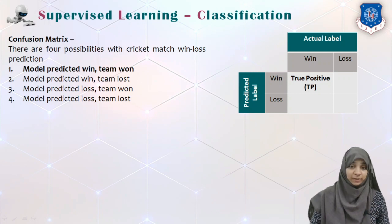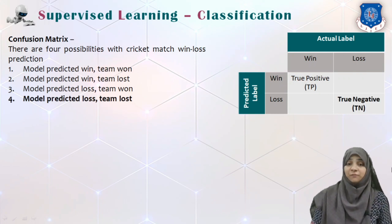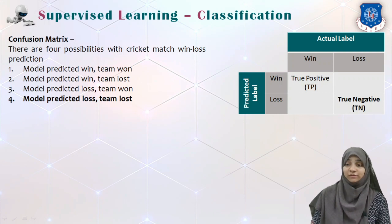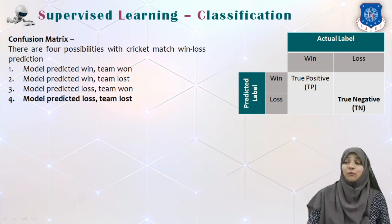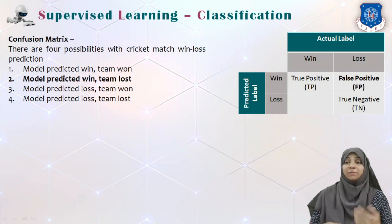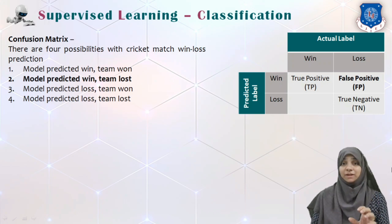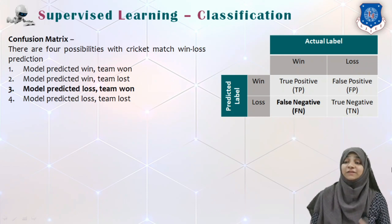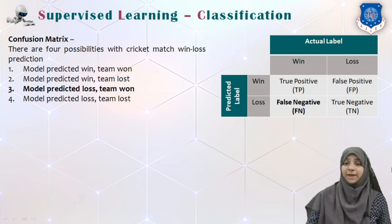True positive means the model predicted the team is going to win and the team actually won. The scenario where the model predicted the team is going to lose and the team actually lost is called true negative. When the model predicts a win but the team actually loses, it is called false positive — the system predicted positive in a false way. If the model predicts a loss but the team actually wins, it is called false negative.